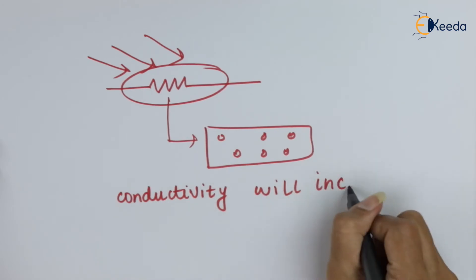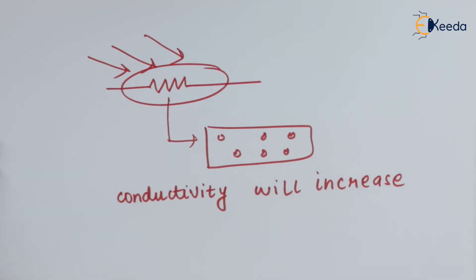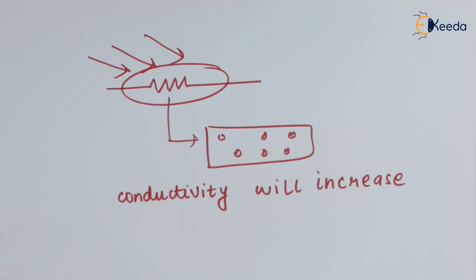Conductivity will increase on receiving the energy. This is how we can understand the working of a light dependent resistor: by receiving the energy, the particles will get excited and because of this excitation, the conductivity will increase. Similarly, when they are not receiving energy, they will not get excited and the conductivity will not increase — they will show high resistance. This is the working of photoconductive cells.